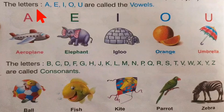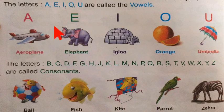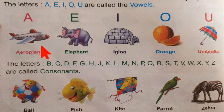See here — some examples. The letters A, E, I, O, U are called vowels. See here: what is this? Aeroplane. A for aeroplane.